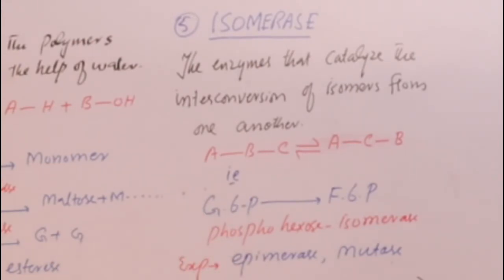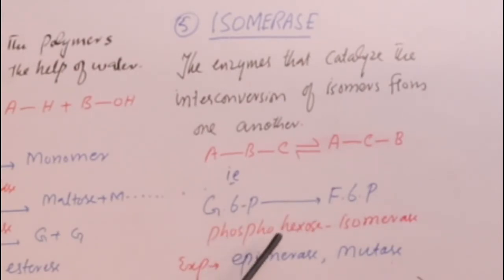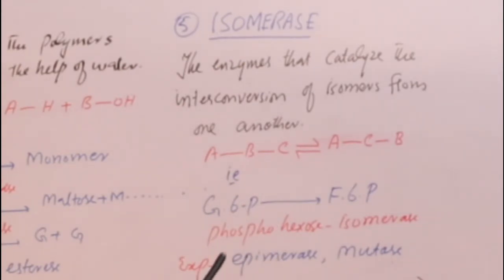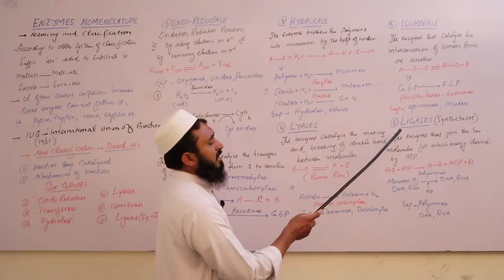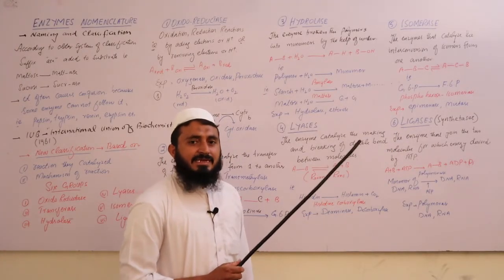For example: glucose-6-phosphate has a phosphate on carbon 6. The enzyme phosphoglucose isomerase converts glucose into fructose — both have six carbons, making them isomers of each other. Other examples of isomerases include epimerases and mutases.